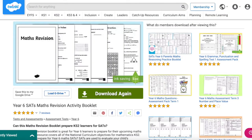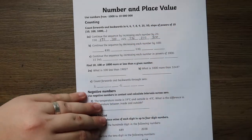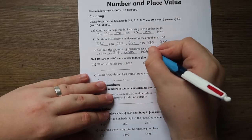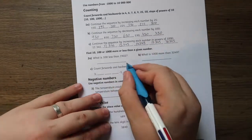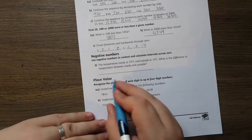The Year 6 SATs maths revision activity booklet is fantastic for Year 6 learners to prepare them for the upcoming maths SATs. This handy resource covers all the national curriculum objectives for mathematics in Key Stage 2. SATs are used to evaluate your child's educational progress throughout their primary school career.